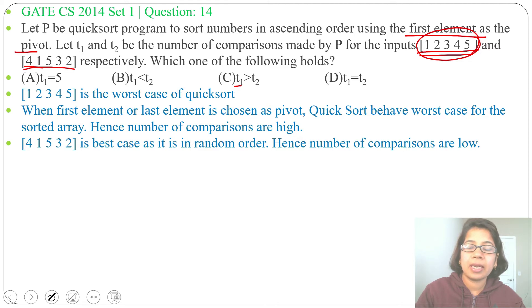As this list is already sorted in ascending order and we are taking first element as pivot, it requires more number of comparisons. This is a random order, so it requires less number of comparisons. So the answer will be option C.